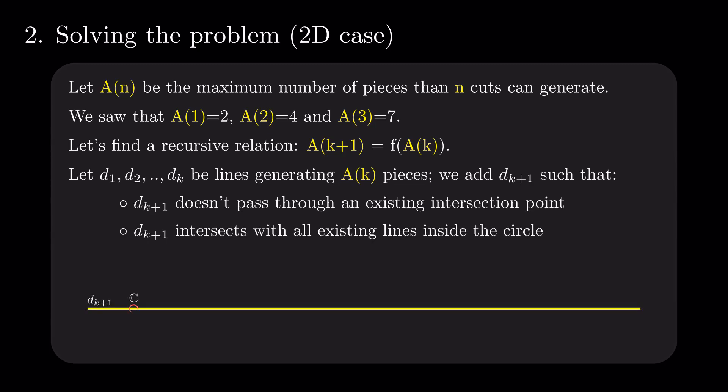If we focus solely on the latest added line, we see that it has two intersection points with the circle, and, between them, k intersection points with the k lines. This means that the segment inside the circle splits into other k plus 1 distinct segments. Each of them is inside one of the slices we had prior and generates a new border. So, k plus 1 of the previous pieces are split in two.